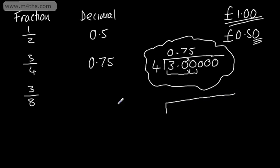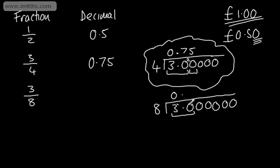Let's go ahead and do 3 eighths. So 8, the denominator, goes on the outside, and 3, the numerator, goes on the inside. Does 8 go into 3? The answer is no, so we put a 0. Does 8 go into 30? It goes in 3 times — 3 times 8 is 24 — and that will leave a remainder of 6. Does 8 go into 60? 7 times 8 is 56, so it goes in 7 times with a remainder of 4. Does 8 go into 40? Yes, it does — exactly 5 times. We can finish our division here, and we've got 0.375. That is now the decimal equivalent.